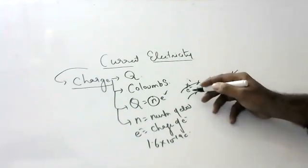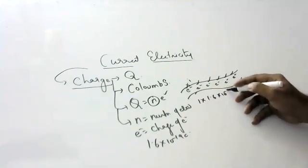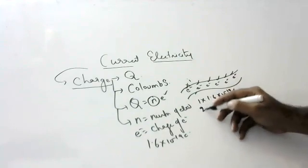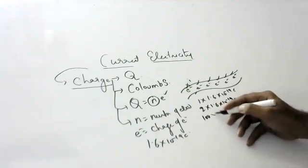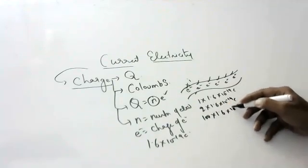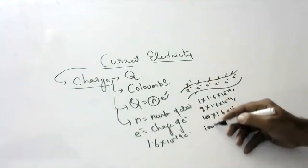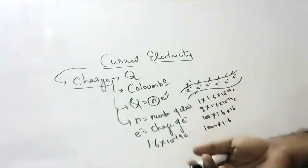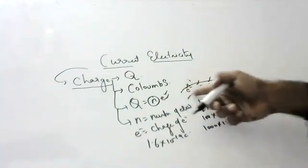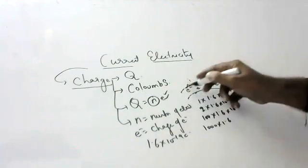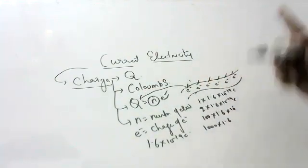Suppose 1 electron is flowing: 1 into 1.6 into 10 to the power of minus 19. Suppose 2 are flowing: 2 into 1.6 into 10 to the power of minus 19. If 100, 1000, or even a million electrons are flowing, you multiply that count by 1.6 × 10⁻¹⁹. The total charge of all electrons flowing in a conductor is called charge.